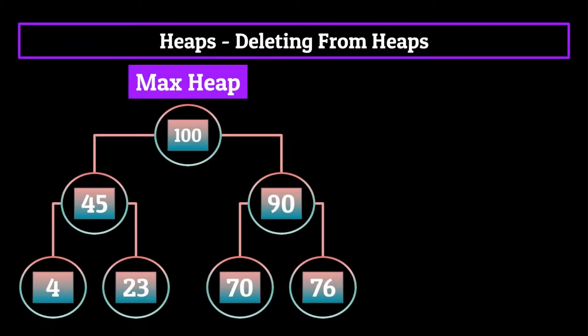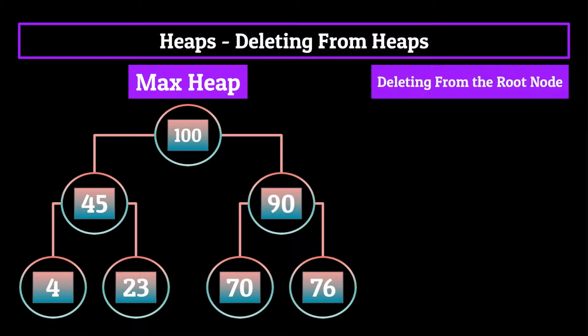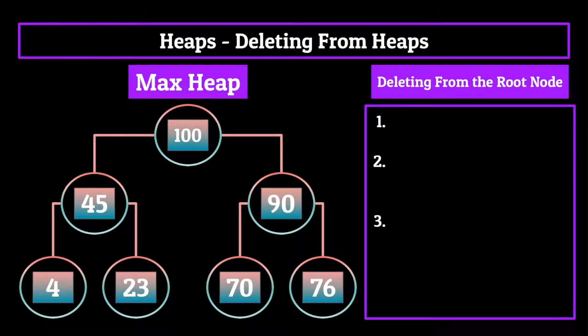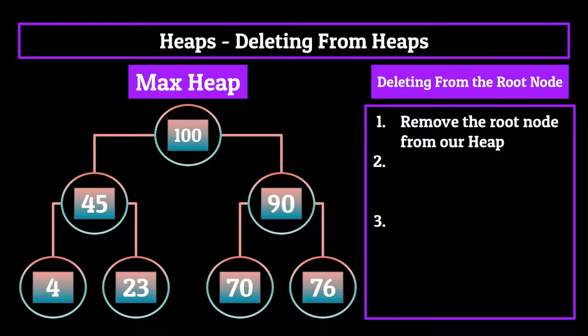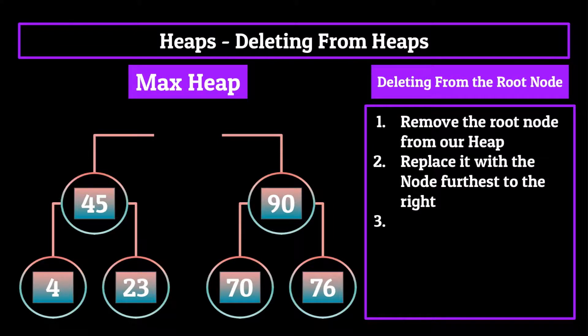Deleting is also pretty simple, at least in our case, since the type of deletion that I want to talk to you guys about is removing the root node from the heap. And you'll see why later on. To delete the root node from a heap, you also follow a three step process. Step one is actually removing the root node from our heap. So in this case, we delete the 100 node. Then step two is replacing it with the node furthest to the right of our heap. In this case, it is the 76 node.